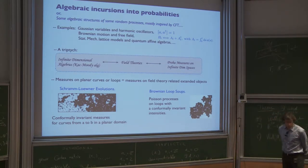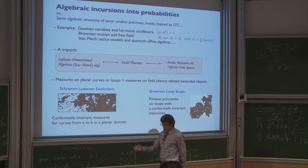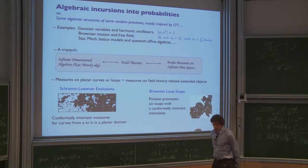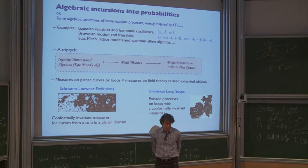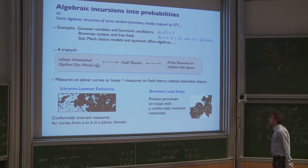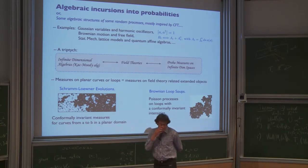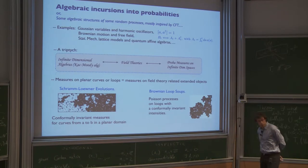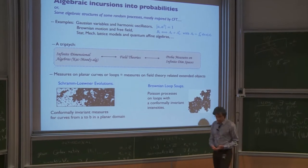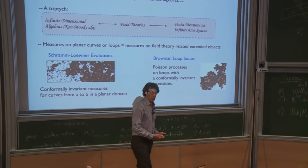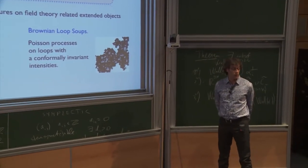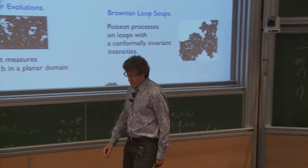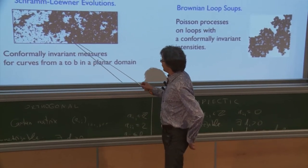The measures I'm going to talk about are linked to random geometry, which try to give measures on extended objects arising in statistical mechanics or field theory. On one hand, there is a stochastic Loewner evolution, which gives measures on curves — planar curves in a simply connected domain. Or a Brownian loop soup, which gives measures on loops. A Brownian loop soup is a process with target space loops: for each realization, you have a set of overlapping loops, and if you look at the boundary of the cluster made by the overlapping loops, you get a new loop, which may be identified with the boundary of a cluster in statistical mechanics. SLE gives, as I said, measures on curves.